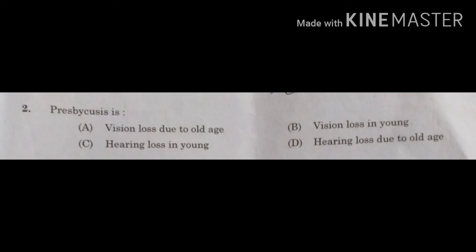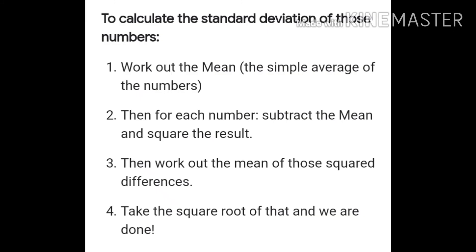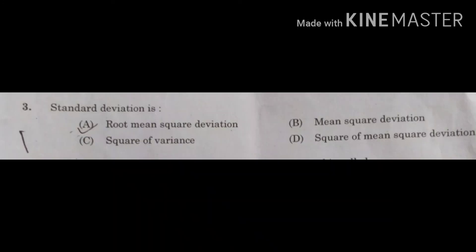The next question asks about standard deviation, with options: root mean square deviation, mean square deviation, square of variance, or square of mean square deviation. To find standard deviation, first calculate the mean (simple average), subtract the mean and square the result, then find the mean of those squared differences, and finally take the square root. So the correct answer is option A — root mean square deviation.